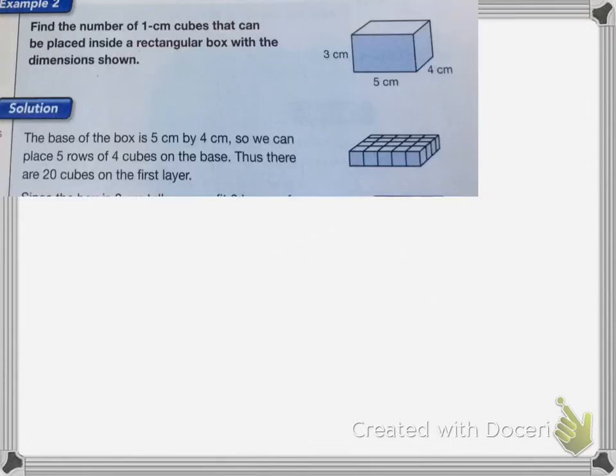With this next one, if you want to find the number of 1 centimeter cubes that can be placed inside this rectangular box, first you're going to figure out how many cubes will be on the base. Since the base of the box is 5 centimeters by 4 centimeters, you can put 5 cubes by 4 cubes on the base.